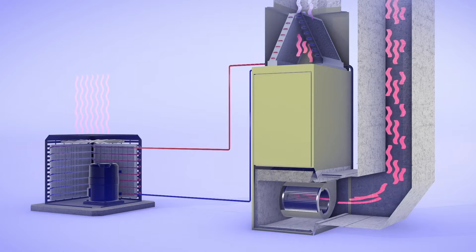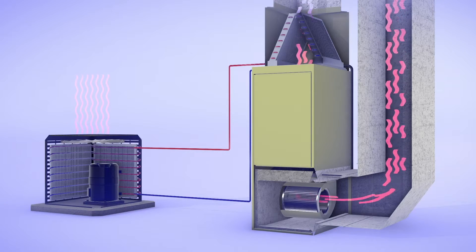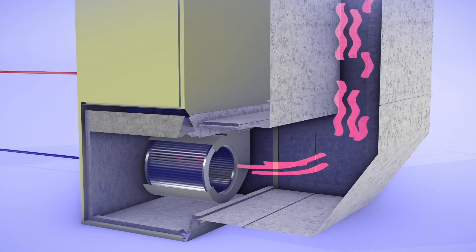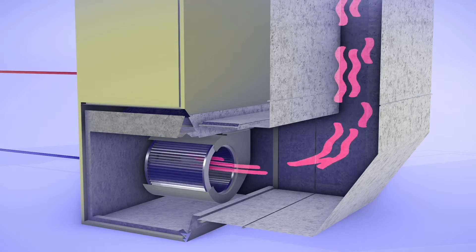In effect, air conditioners don't create cold air. They draw heat out of the air in your home. In the cooling season, your air conditioner uses your furnace fan to move air in your home.